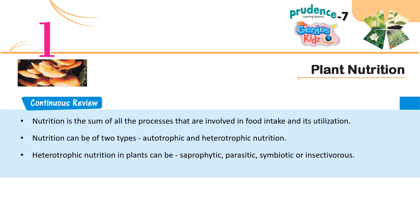Continuous Review: Nutrition is the sum of all the processes that are involved in food intake and its utilization. Nutrition can be of two types: autotrophic and heterotrophic. Heterotrophic nutrition in plants can be saprophytic, parasitic, symbiotic, or insectivorous.